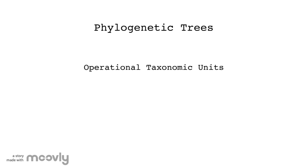In rooted trees, OTU divergence, or cladogenesis, is represented by the splitting of branches at places called internal nodes, easily identified by the vertical lines. These nodes represent the most recent common ancestor for the split branches. Rooted trees have a common ancestor which all OTUs in that tree can be traced back to.